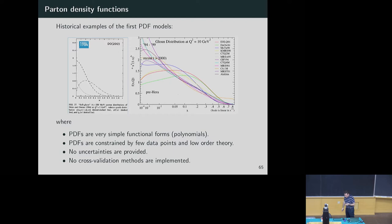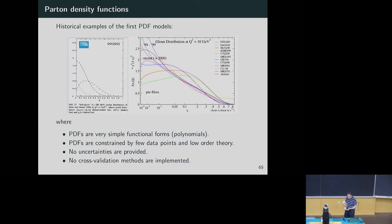Looking at the CERN yellow report from 2016, for many Higgs production channels, the PDF plus alpha-strong uncertainty is large — in many cases larger than the scale uncertainty, which are the two big uncertainties in our computations. So finding the best set of PDFs is important, but it's also important to reduce uncertainty and have a very good uncertainty estimate. Historically, everything started in 1984. PDFs in early years were just central values from naive models based on few data points from the D0 experiment. If you plot the gluon PDF for different years — 1994, 1999, 2000 — you see completely different solutions based on the year and dataset.